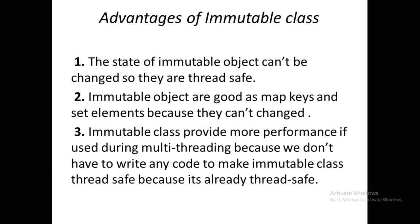The first advantage of immutable class is that its object state cannot be changed, so it is thread-safe. We don't need to use any synchronization or thread-safe logic. The second advantage is that immutable objects are good as Map keys and Set elements because they cannot be changed. The third advantage is that immutable classes provide better performance in multi-threading because we don't have to write any extra code to make them thread-safe — they already are.